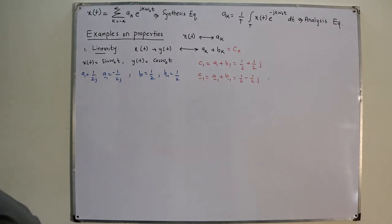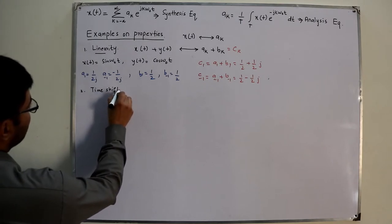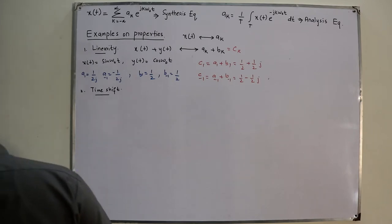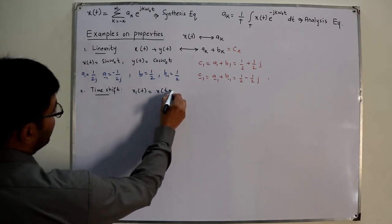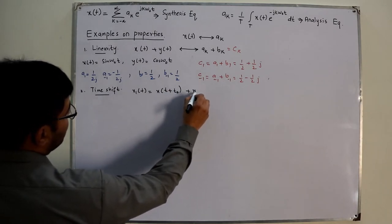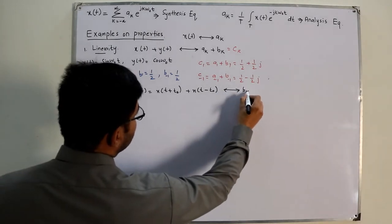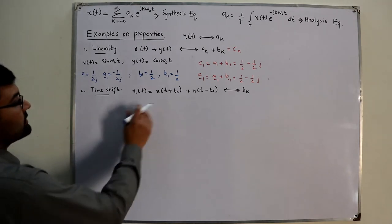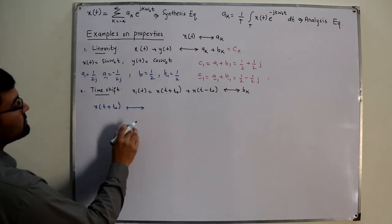Property number two is the time shift. If x(t) has Fourier coefficients ak, and you're asked to find the Fourier coefficients of x₁(t) = x(t + t₀) + x(t - t₀), you need to find bk. For x(t + t₀), the time shift property says you multiply by the exponential e^(jkω₀t₀).